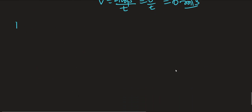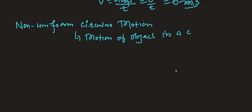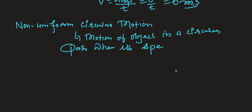Now, another type is non-uniform circular motion. This is the motion of an object in a circular path when its speed is changing. That type of motion is called non-uniform circular motion.